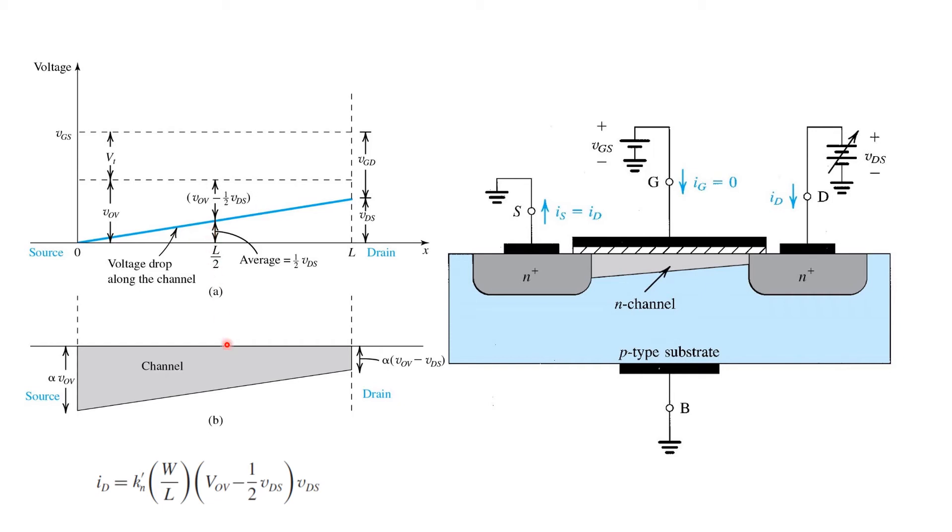So as VDS increases, we can calculate the value of drain current using this expression here, which looks just like the expression from the last slide, except that we've replaced VOV with this new, more accurate expression VOV minus one half VDS.